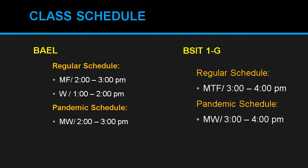You also have your class schedule. For the Bachelor of Arts in English Language, your schedule will be Monday and Friday, 2 to 3 p.m., and on Wednesday, 1 to 2 p.m. For the Bachelor of Science in Industrial Technology, Section G, your regular schedule will be Monday, Tuesday, and Friday, 3 to 4 p.m. And for your pandemic schedule, it will be Monday and Wednesday only, 3 to 4 p.m. Please make sure to follow this schedule.